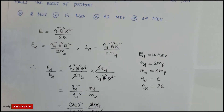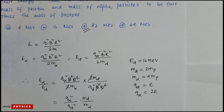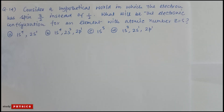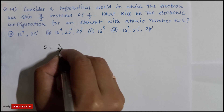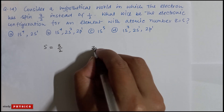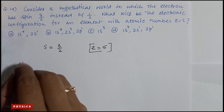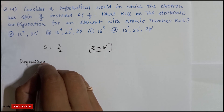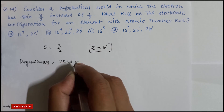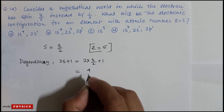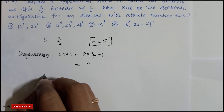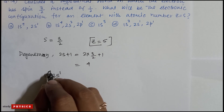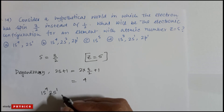Question 14: Consider a hypothetical world in which the electron has spin 3/2 instead of 1/2. What will be the electronic configuration for an element with atomic number Z equal to 5? Degeneracy is 2s plus 1, so 2 times (3/2) plus 1 equals 4. That means the 1s orbital holds 4 electrons. For Z equals 5, the configuration is 1s⁴ 2s¹, so the answer is A.